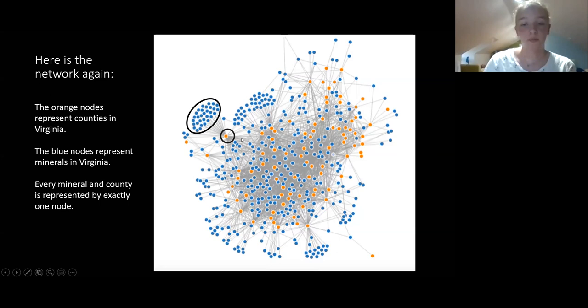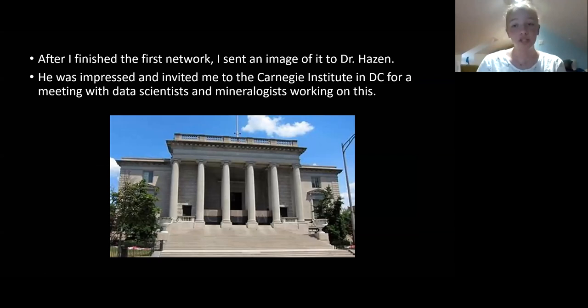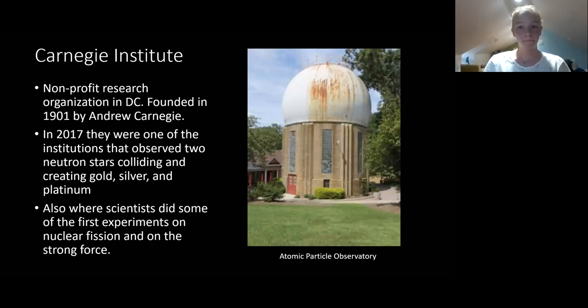After I finished this first network, I sent an image of it back to Dr. Hazen. He was impressed with it, and so he invited me to the Carnegie Institution in DC for a meeting with data scientists and mineralogists working on this. This picture is at the front of Carnegie. A little bit about Carnegie, it's a non-profit research organization in DC founded in 1901 by Andrew Carnegie. In 2017, they were one of the institutions that observed two neutron stars colliding, creating gold, silver, and platinum. It was also where scientists did some of the first experiments on nuclear fission and on the strong force. This building here is the Atomic Particle Observatory. They built it to look like an observatory so that people that live nearby wouldn't complain about a particle accelerator. Now they use this storage shed.